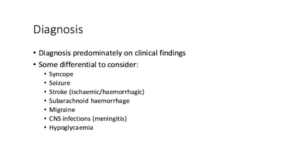In terms of diagnosis, a transient ischemic attack is predominantly a clinical diagnosis, but it's worthwhile knowing some differential diagnoses. These include syncope, seizures, stroke — ischemic or hemorrhagic, especially if it's been a prolonged presentation — subarachnoid hemorrhage, migraine, CNS infections such as meningitis, and hyperglycemia, all of which are potential differential diagnoses that need to be considered.